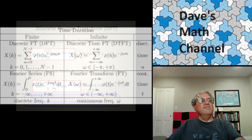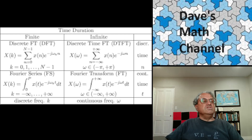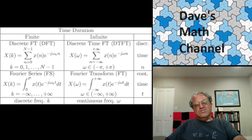Here's all the formulas on one cheat sheet. There's a kind of two-by-two grid: the finite cases versus the infinite cases, and discrete versus continuous. The Fourier series is on the bottom left, the Fourier transform on the bottom right, and then we have the discrete Fourier series on the top left and the discrete Fourier transform on the top right. So those are all four cases.